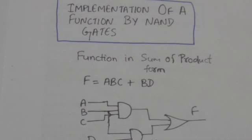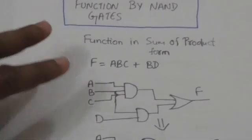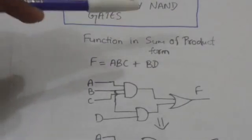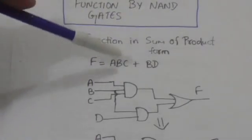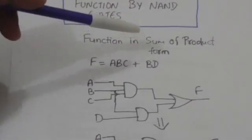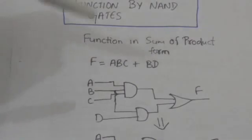Now, how can we implement a boolean function expressed in sum of product form by NAND gates? First, look at this function expressed in sum of product form. We can implement it by NAND and OR gates.